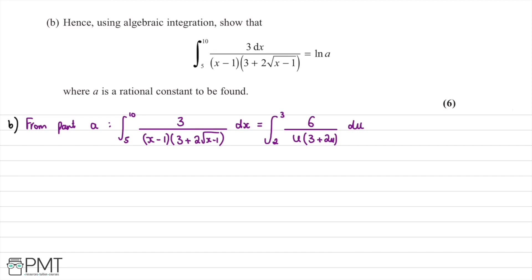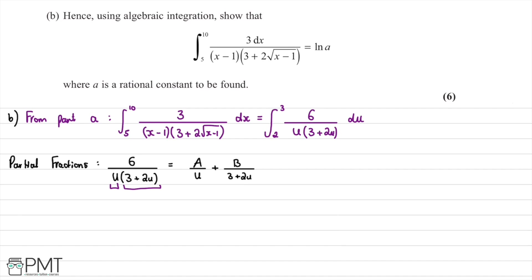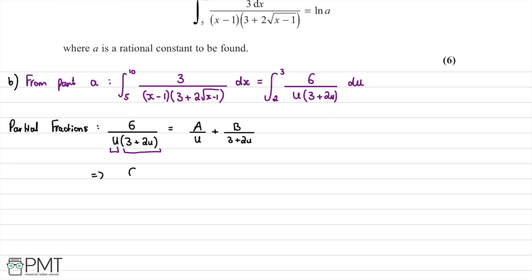The next step is to use partial fractions. We write 6 divided by u times 3 plus 2u as A divided by u plus B divided by 3 plus 2u. Multiplying both sides by u times 3 plus 2u gives 6 equals A times 3 plus 2u, plus B times u.